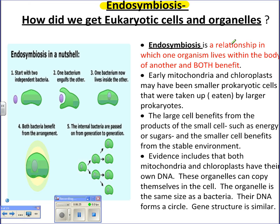Both organisms benefit, making it a type of mutualism. The large cell benefits from the products the small cell makes, such as energy and sugar, and the small cell gets a home — a stable environment. The evidence we have for endosymbiosis comes from DNA. Both have very similar gene structures; their DNA is in a loop, like a plasmid. When we look at mitochondria, chloroplasts, and bacteria, they have a lot of things in common in their DNA, which leads us to believe that one bacterium ended up engulfing the other.